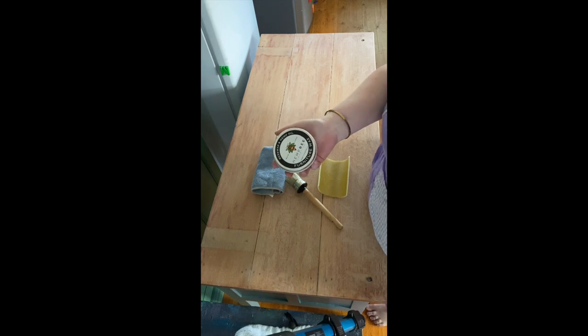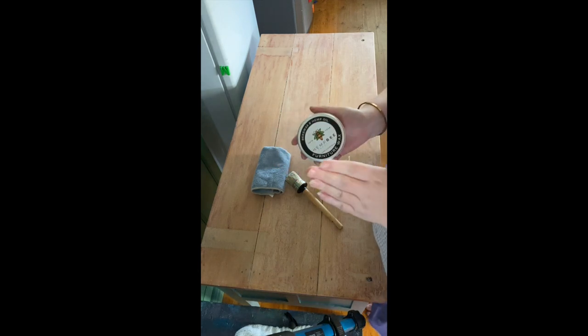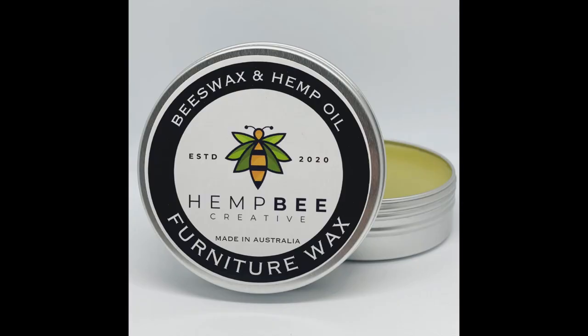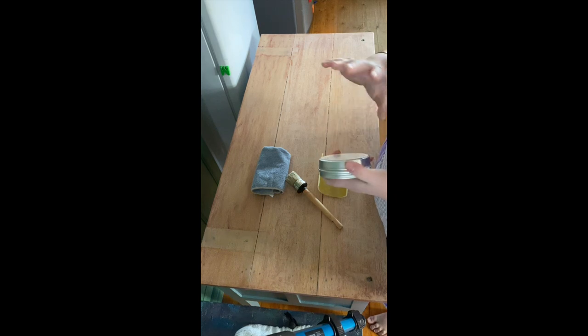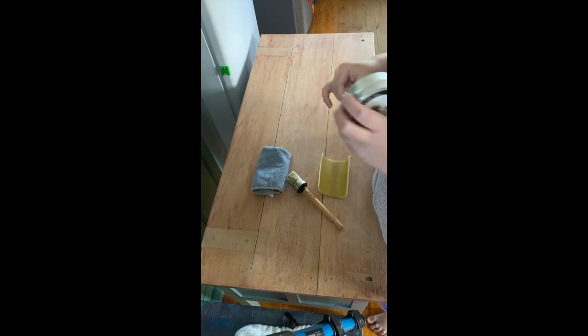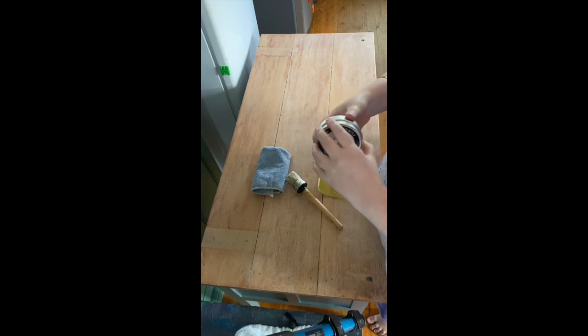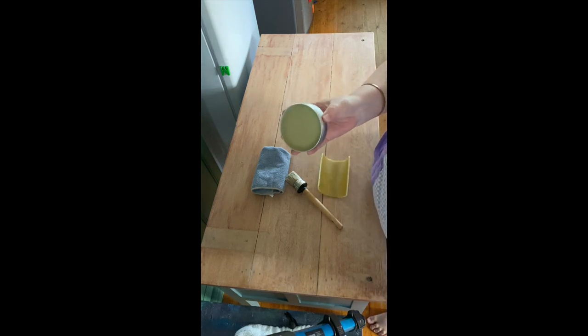It is Australian made and owned, it's called Hemp Bee Creative and it is their beeswax and hemp oil furniture wax. So I've previously used a hemp wax and I absolutely loved it, so when I saw this was available I immediately jumped onto it. I'm very keen to give this a go.